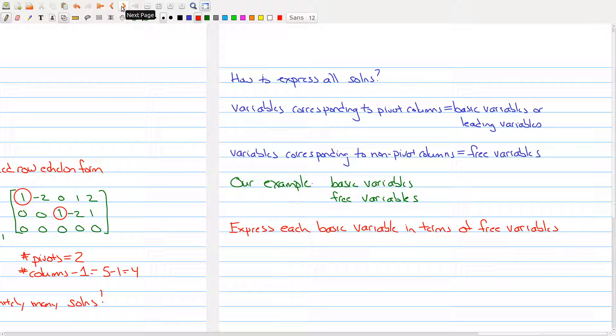So we introduce two important terms. We want to characterize those variables that correspond to pivot columns. And we want to describe those variables that correspond to non-pivot columns. So those that correspond to pivot columns, depending upon which book you're looking at, they're either called basic variables or leading variables. And variables that correspond to non-pivot columns are called free variables.